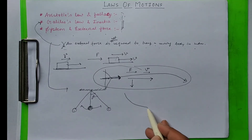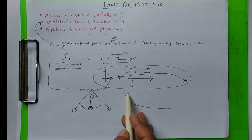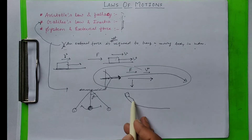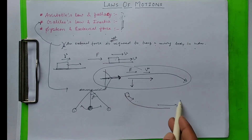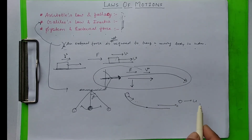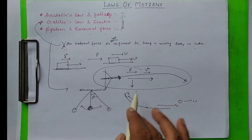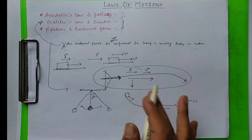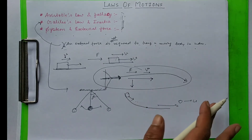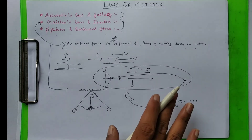Suppose this is a smooth inclined plane with no air resistance. A ball released from a point will continuously move with the same speed — its final velocity will remain unchanged and it will not stop, as long as there is no friction, no air resistance, and no external force opposing the motion. This is all about the law of inertia.